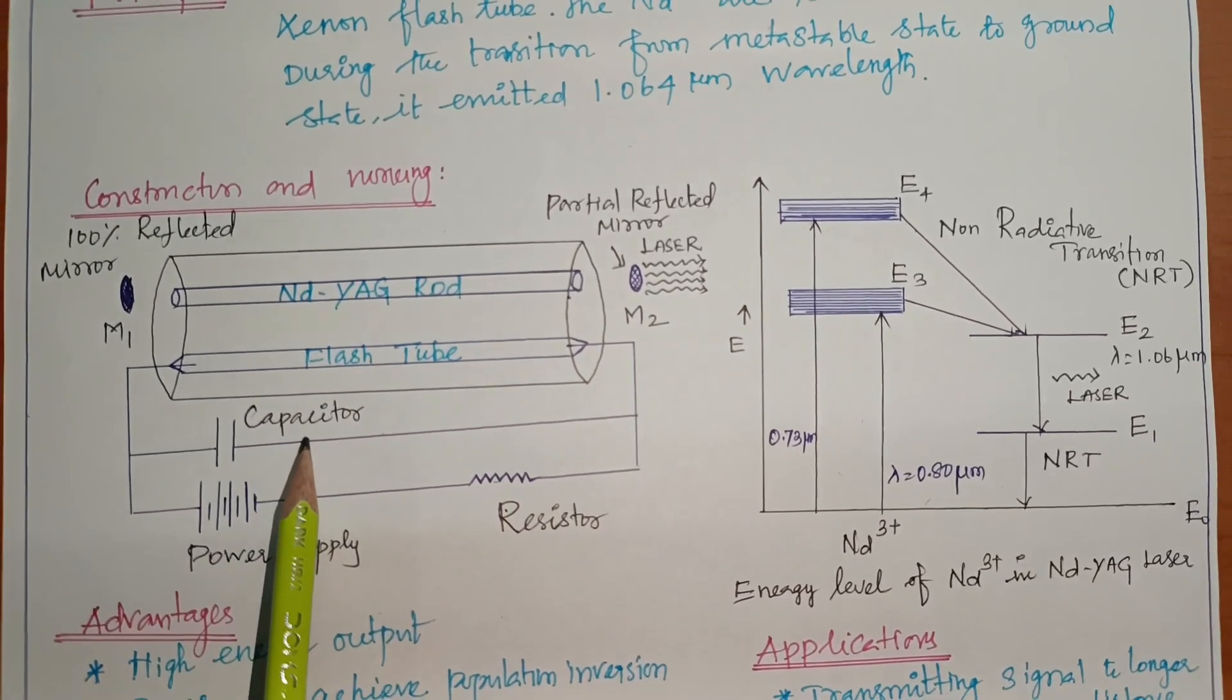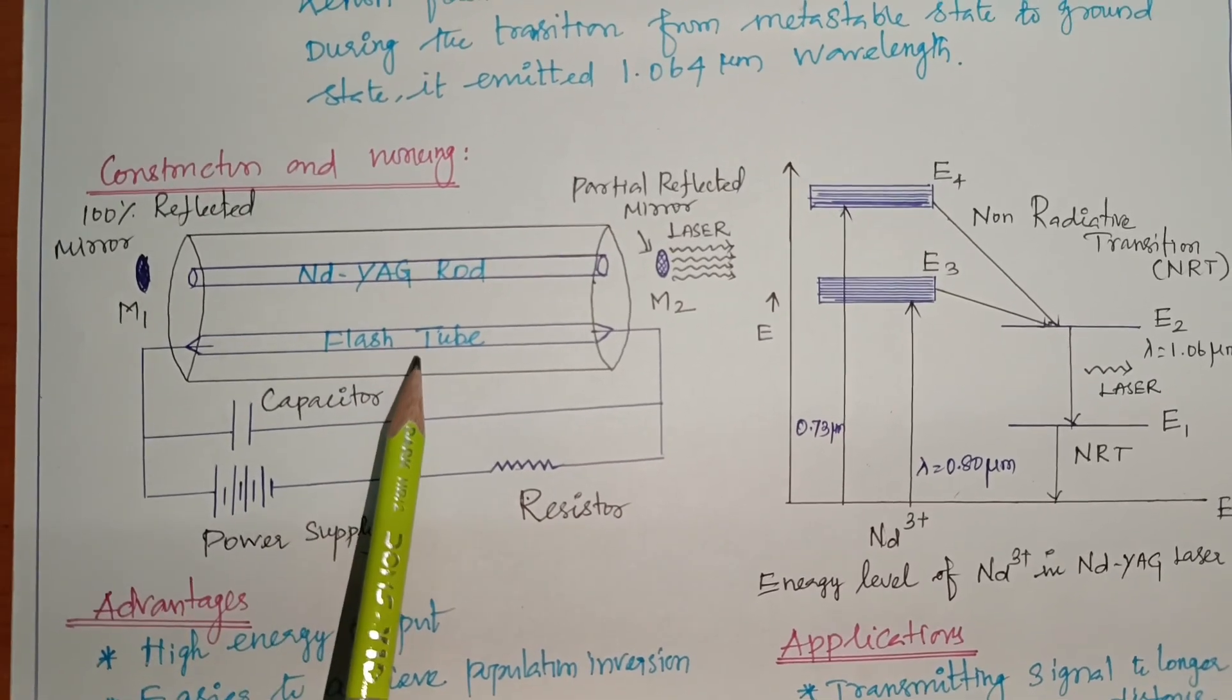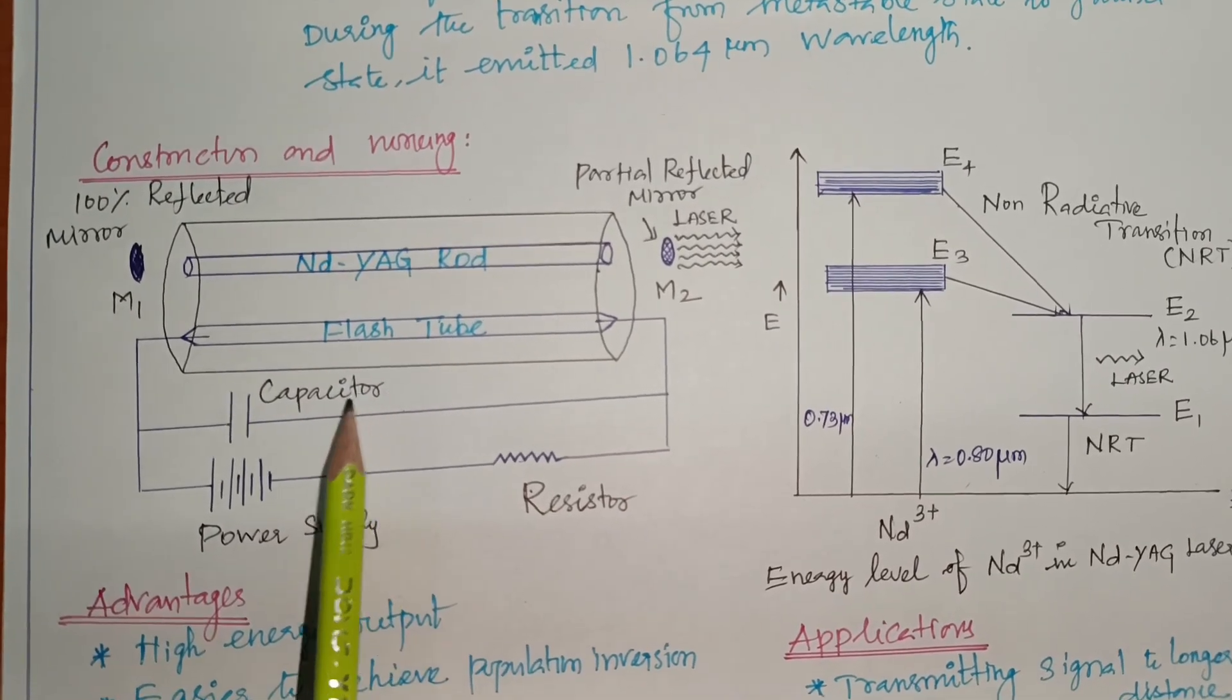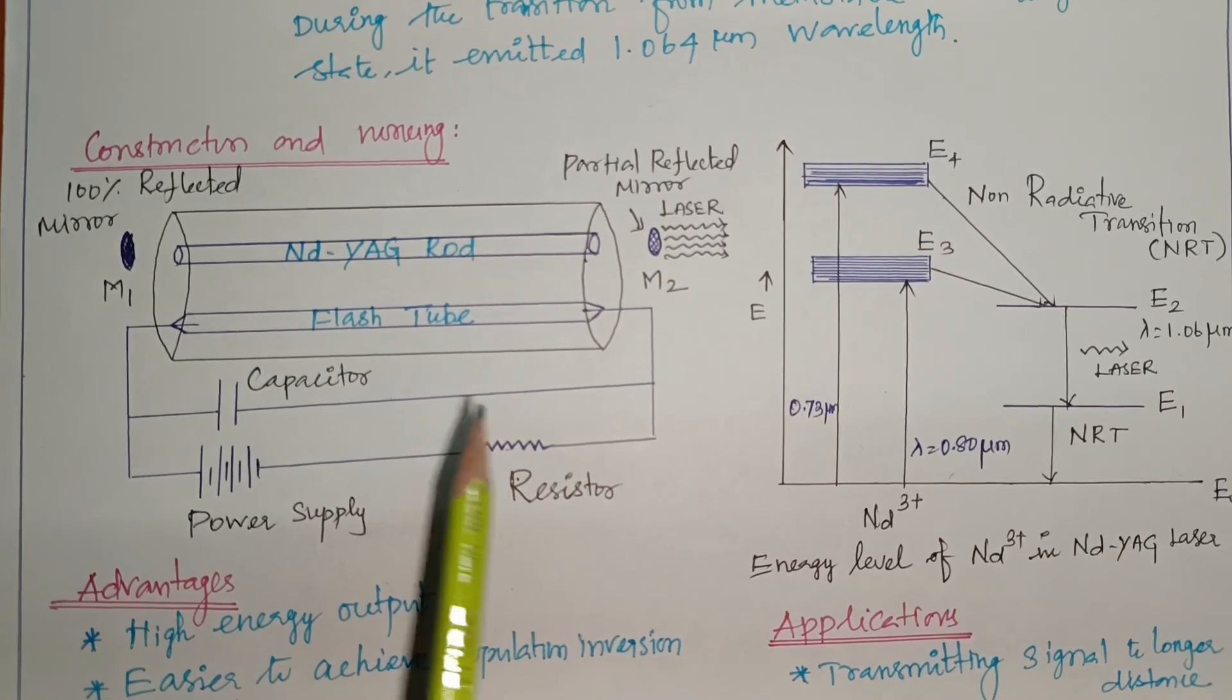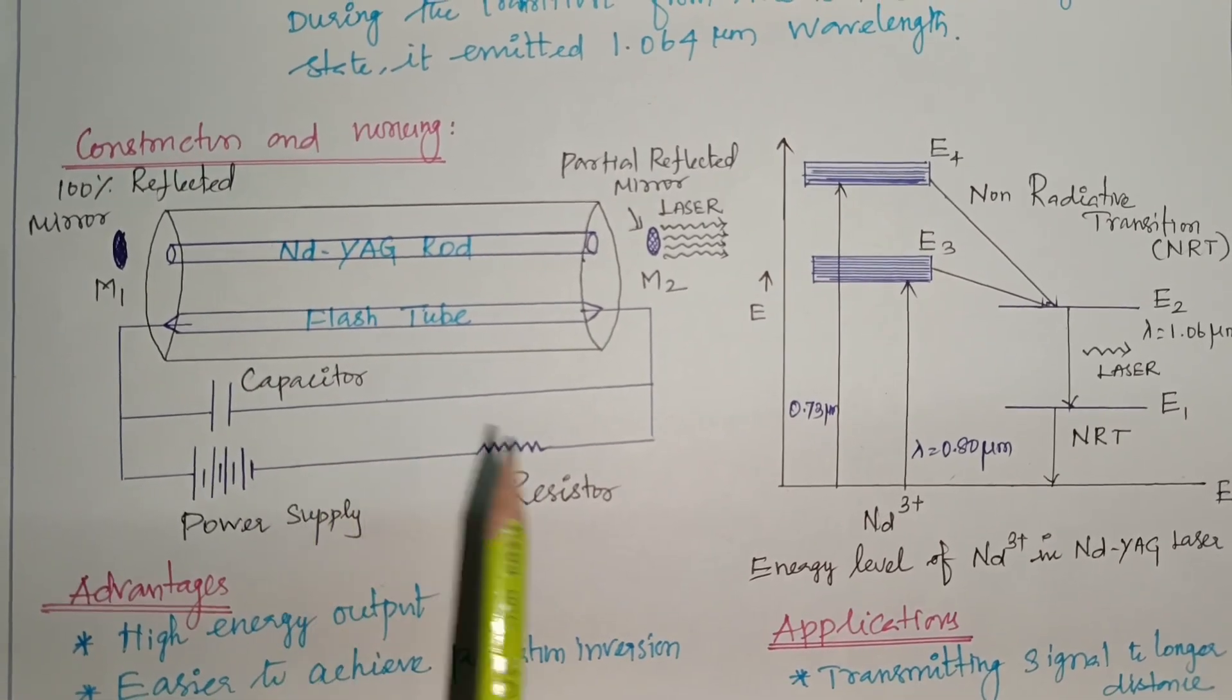So in the flash tube capacitor connect. The capacitor is used. The flash lamp intensity rise. Power supply. Resistor is used. Those these are all the constructions.